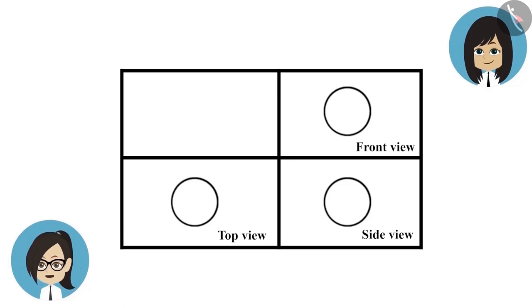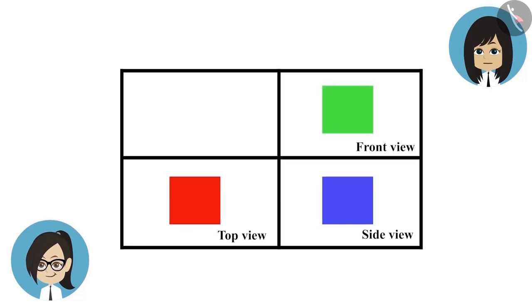How can this happen? All three views of any object should be different. Hey, I have another drawing in which all three views of one object are the same. Show that also. See this. All these are in the shape of a square and that too of the same size. Yes, now try and guess.